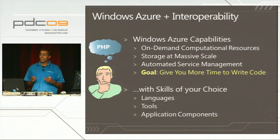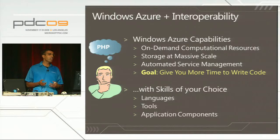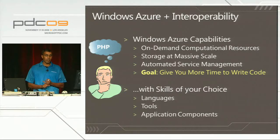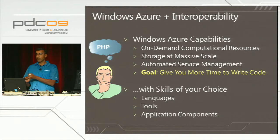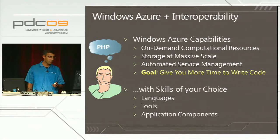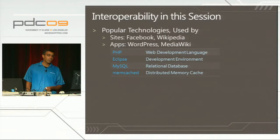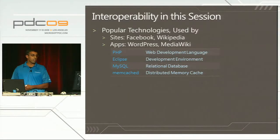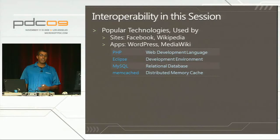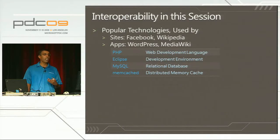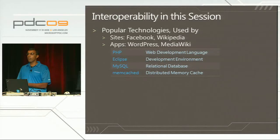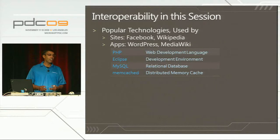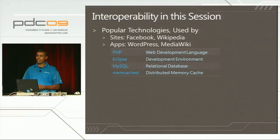But you might be wondering if you can take advantage of these capabilities using skills of your choice - your favorite languages, your favorite tools, and your favorite application components. We'll address that concern head-on in this session by walking through some popular open-source technologies running on Windows Azure. These are technologies used by popular sites like Facebook and Wikipedia, as well as popular applications like WordPress and MediaWiki.